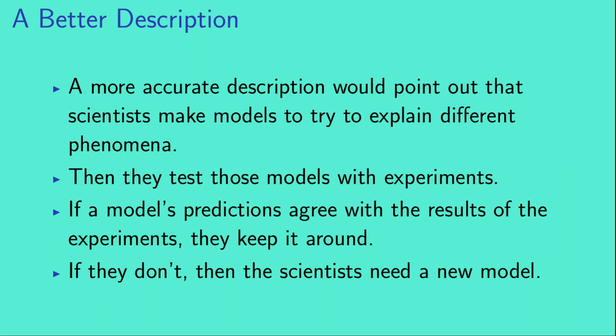A more accurate description would be to point out that scientists make models to try to explain different phenomena. Then they test those models with experiments. If a model's predictions agree with the results of the experiments, then they keep that model around. But if the model's predictions don't agree with the results of experiments, then the scientists need to find a new model.